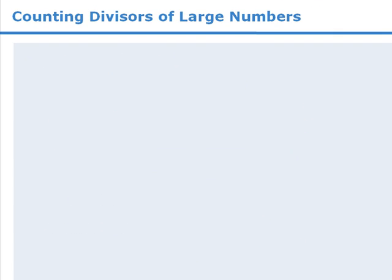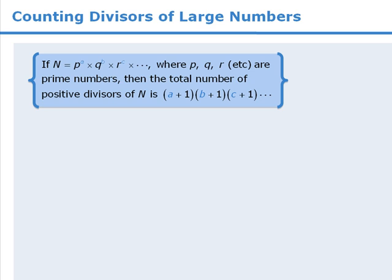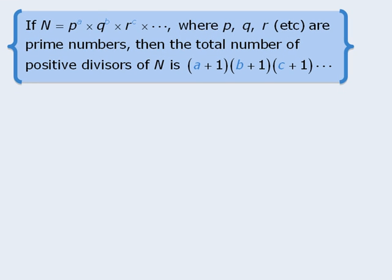Okay, now let's generalize. If n is equal to p to the power of a times q to the power of b times r to the power of c and so on, where p, q, r and so on are prime numbers, then the total number of positive divisors of n is equal to a plus 1 times b plus 1 times c plus 1 and so on.